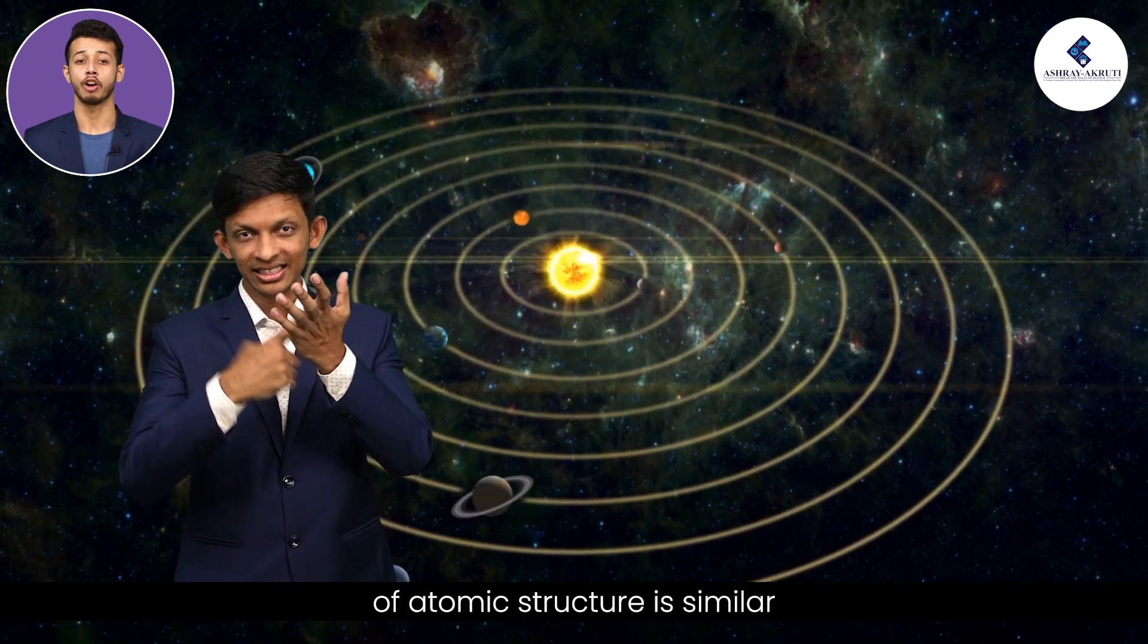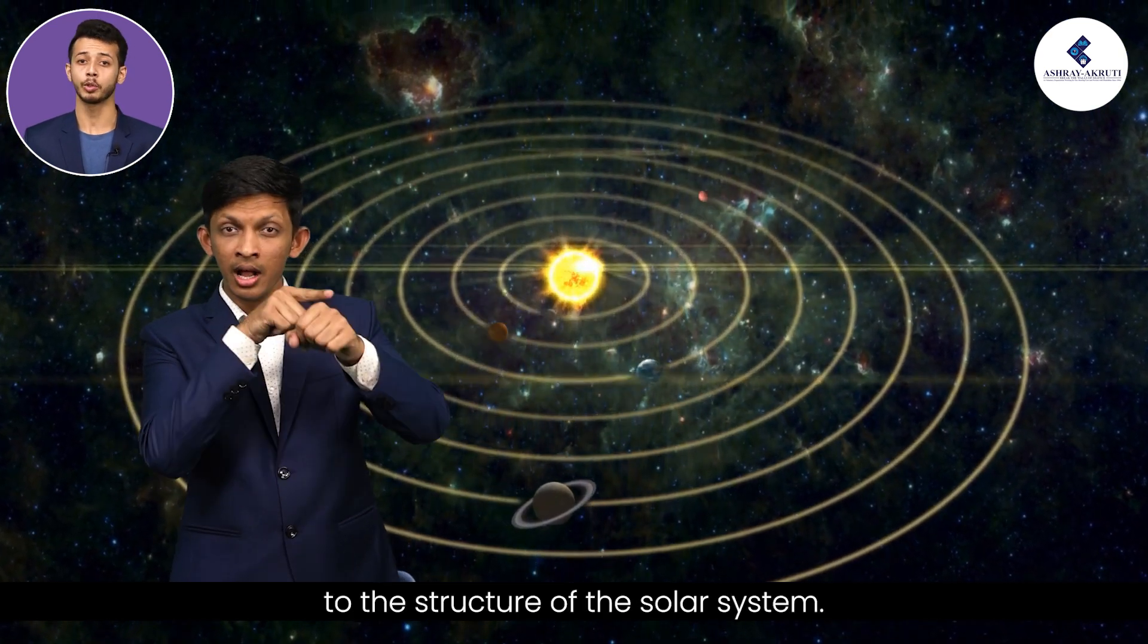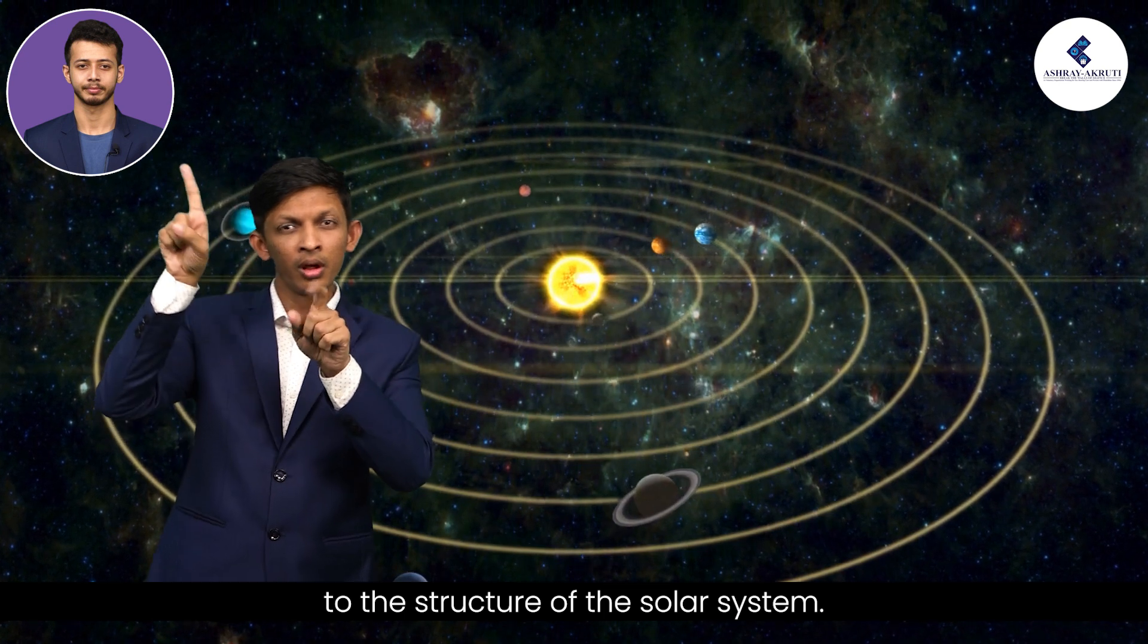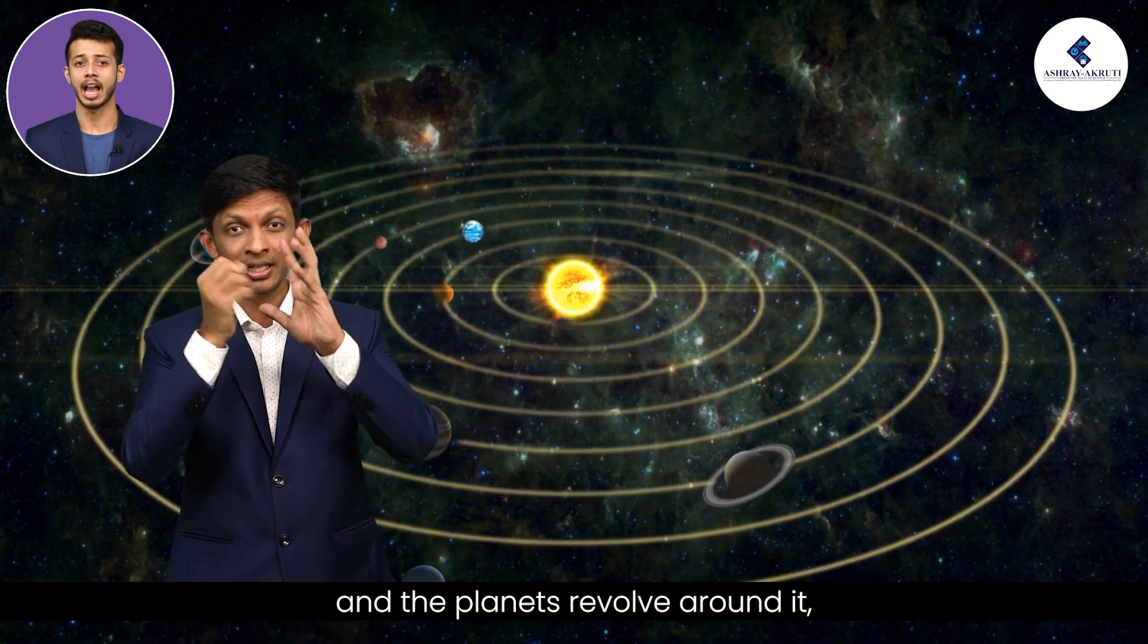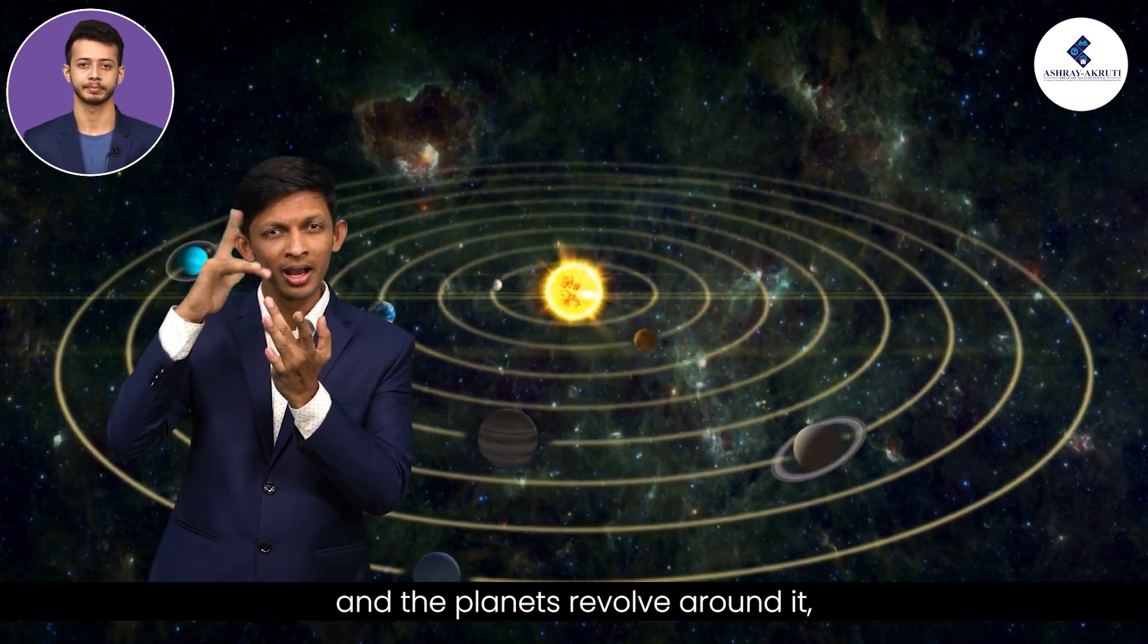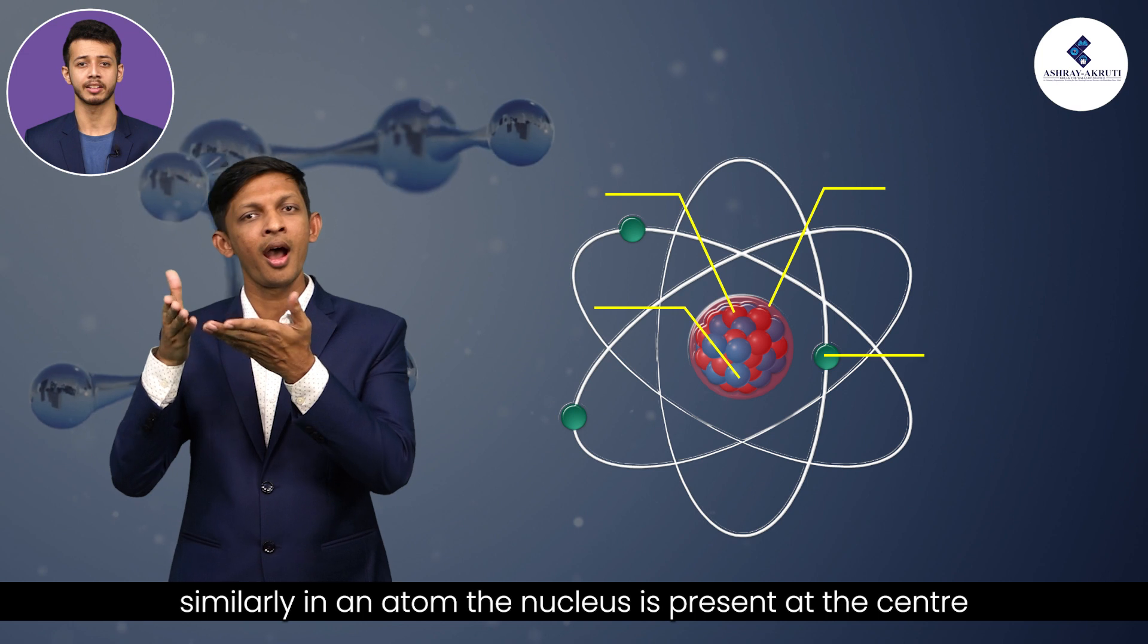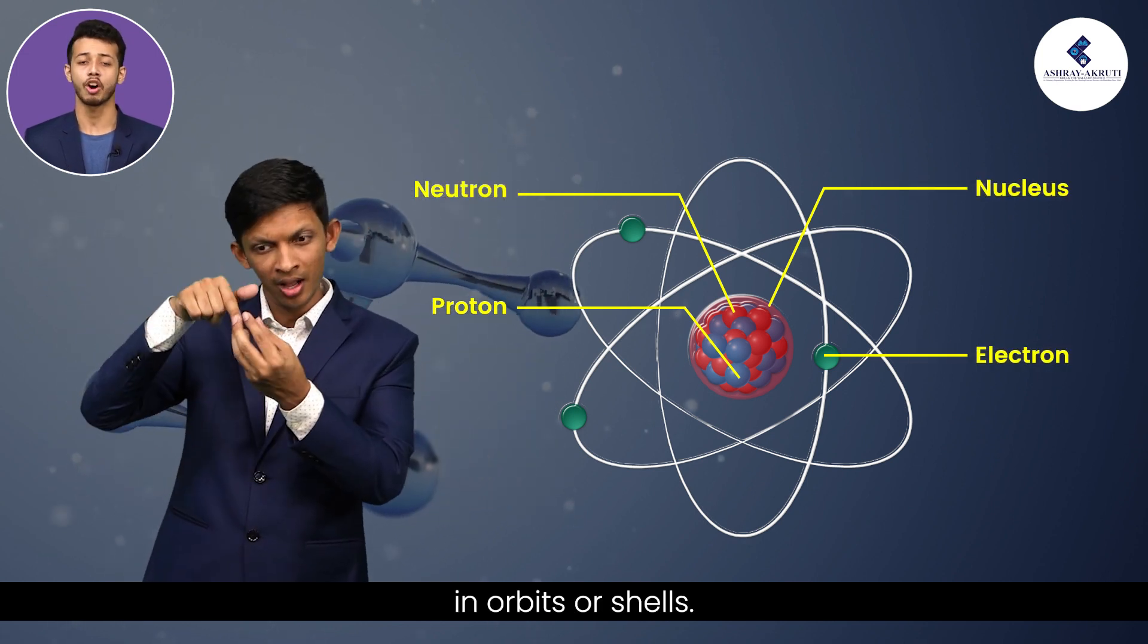Rutherford's model of atomic structure is similar to the structure of the solar system. As in the solar system, the sun is at the center and the planets revolve around it. Similarly, in an atom, the nucleus is present at the center and the electrons revolve around it in orbits or shells.